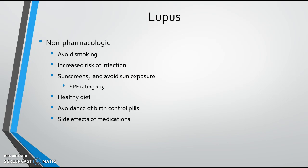Non-pharmacologic treatment includes avoiding smoking and minimizing infection risk, since white cell counts may be decreased and corticosteroid therapy further increases infection risk. Patients need to be taught sun protection with high-SPF sunscreen, healthy diet, and avoidance of birth control pills. Patient education on medication side effects is important — for example, explaining blood sugar elevation with corticosteroids or expected weight gain and fat redistribution with long-term steroid use. That concludes the PowerPoint on lupus.